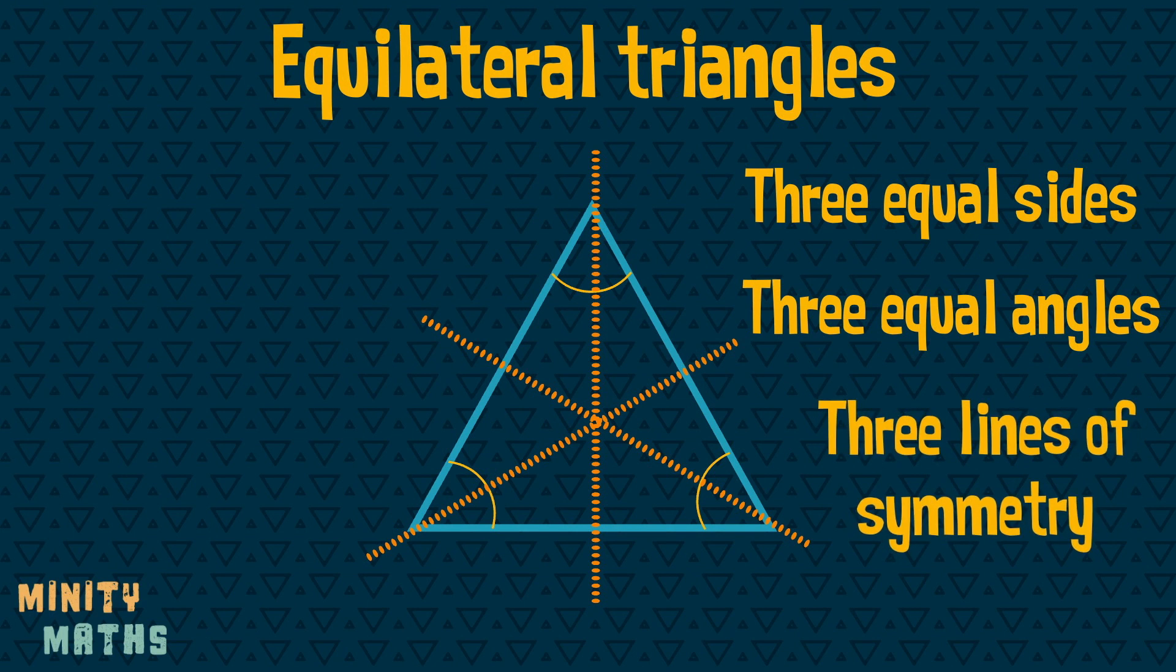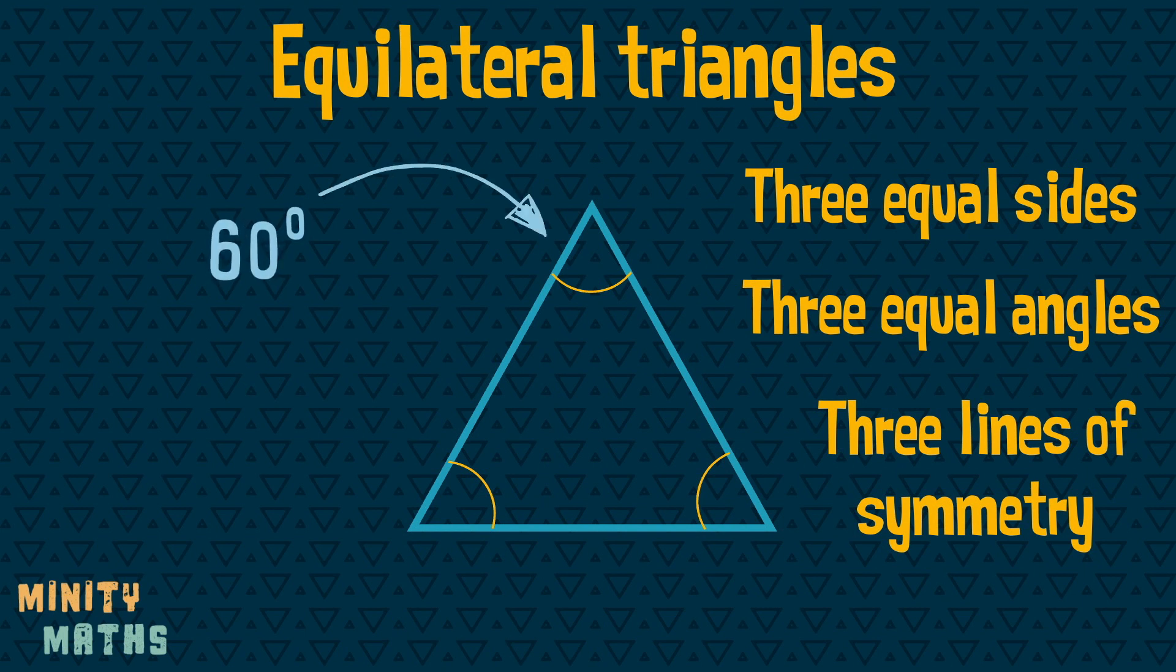Because all angles in a triangle add up to 180 degrees, each angle in an equilateral triangle will be equal to 60 degrees. We can also show the fact that all sides are equal by using these little lines to mark each side.